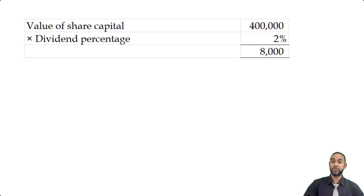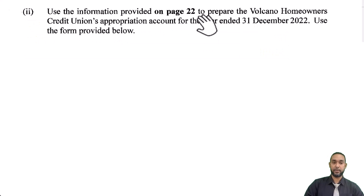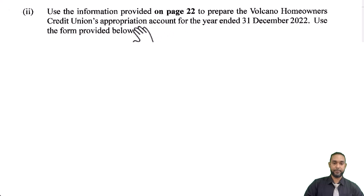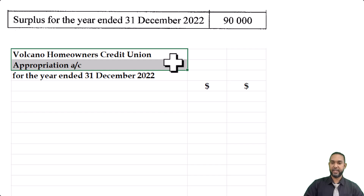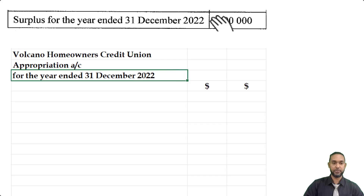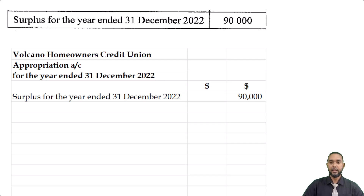Now let's look at part two. It says: use the information on the previous page to prepare the appropriation account for the year ended 31 December 2022. You're going to head it up properly — Volcano Homeowners Credit Union, Appropriation Account, for the year ended 31st December 2022 — and start with the surplus for the year ended 31st December 2022, which is $90,000.